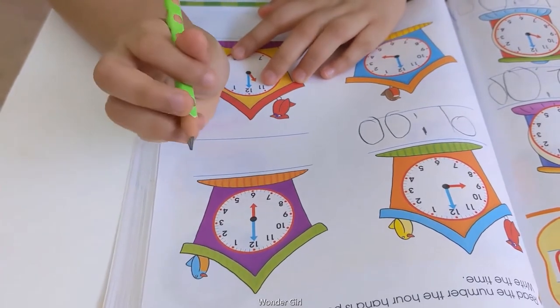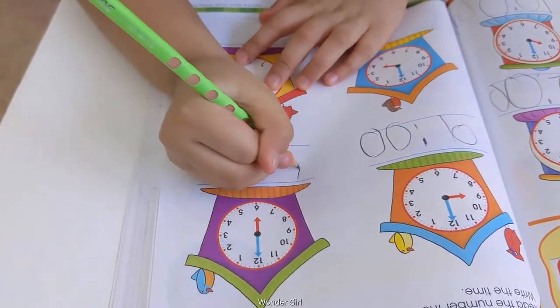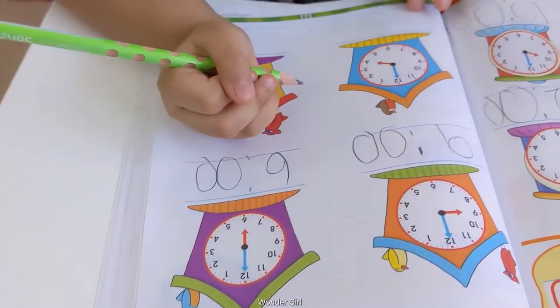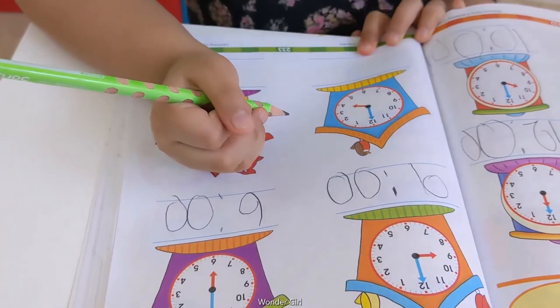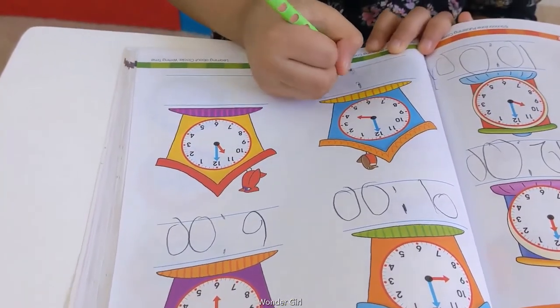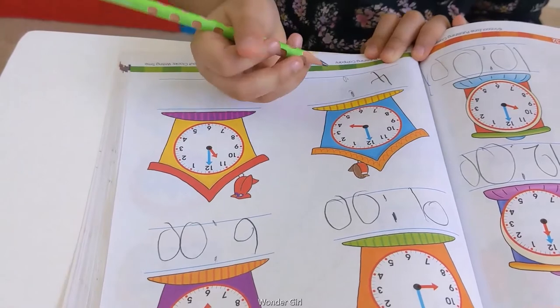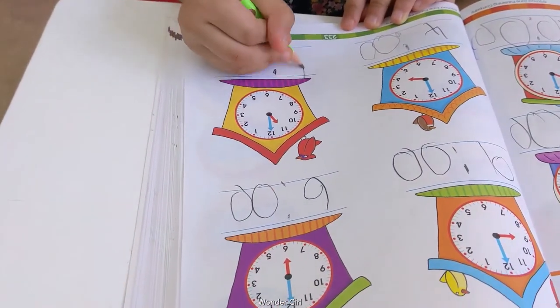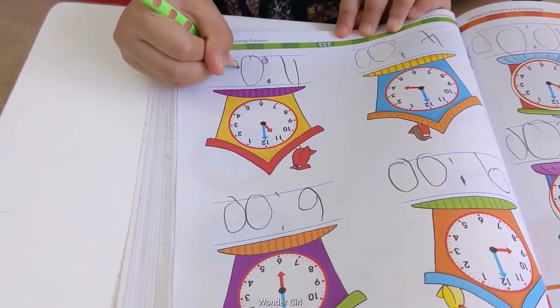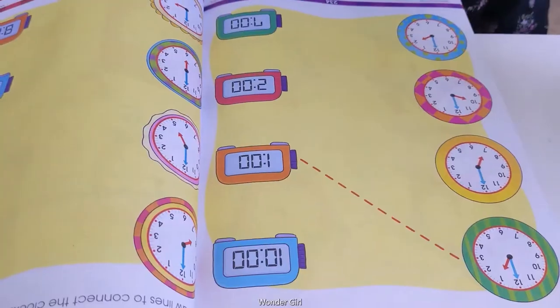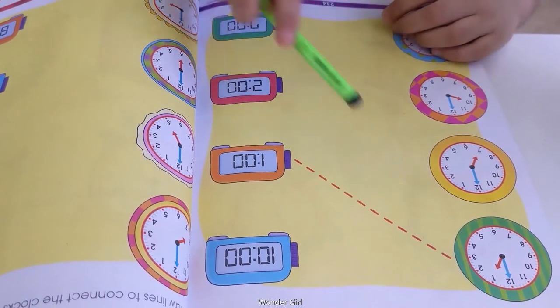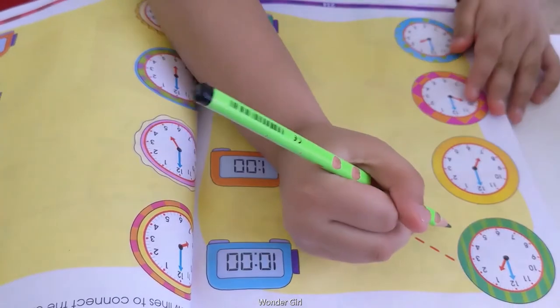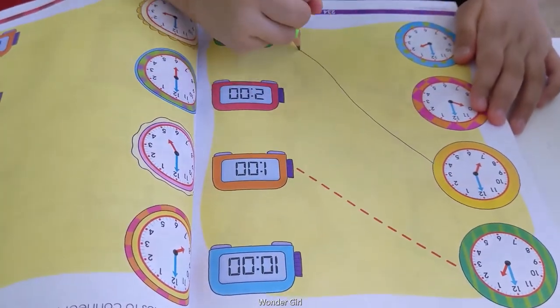This is 6 o'clock. This is 4 o'clock. 11 o'clock. Now let's find 7 o'clock on the clock.